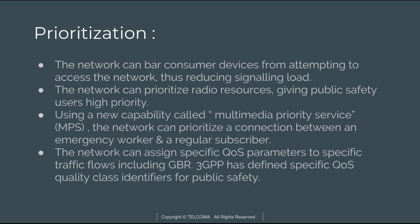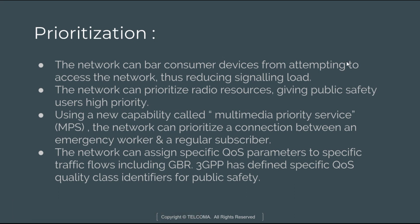Next is prioritization to prevent interference. In emergency situations with high load, the network can prioritize at multiple levels. First, the network can bar consumer devices from attempting to access the network, reducing signaling load. Second, the network can prioritize radio resources for public safety users with high priority using a new capability called Multimedia Priority Service — MPS — which can prioritize a connection between an emergency worker and a regular subscriber. Finally, the network can assign specific quality of service parameters to traffic flows.